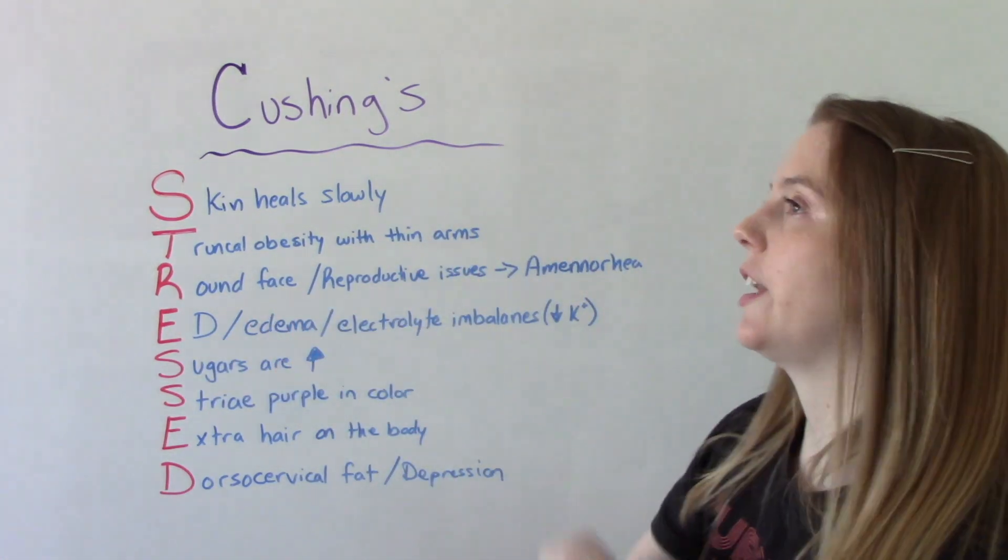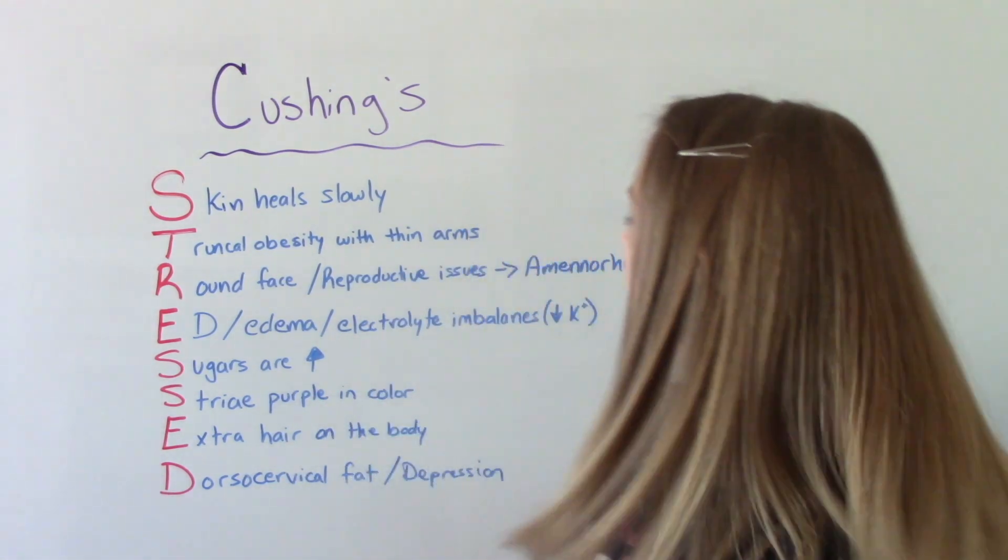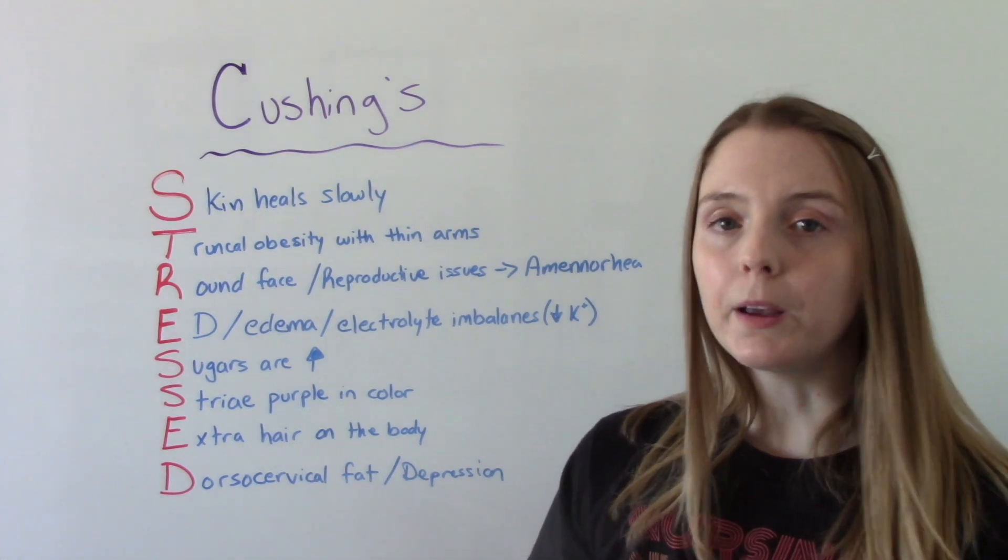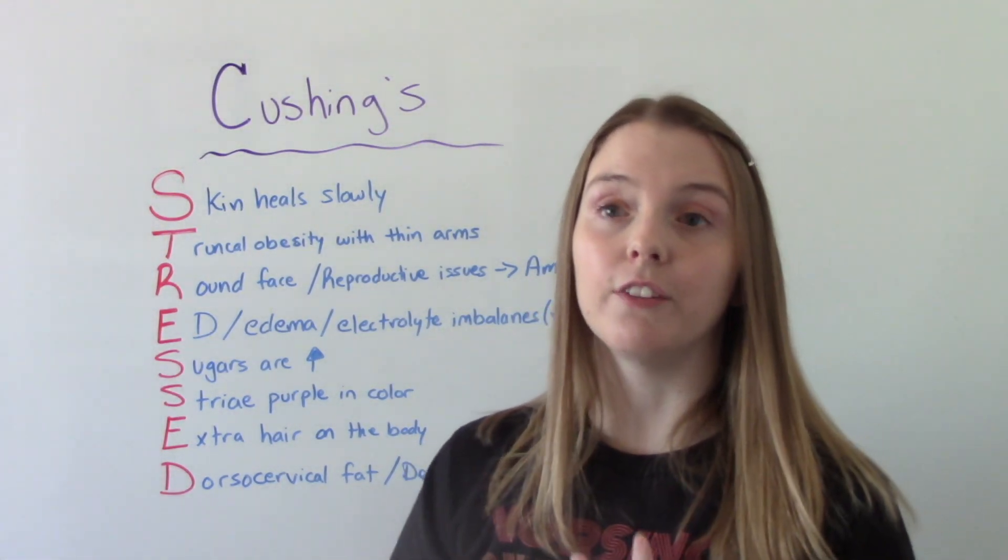R is for round face, sometimes they refer to that as a moon face appearance. Also reproductive issues. In women who have this, they may experience amenorrhea, so lack of menstruation.